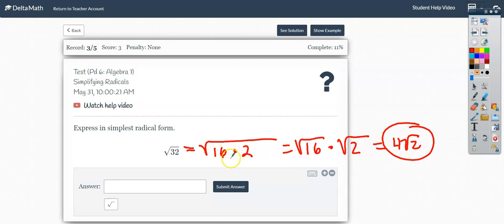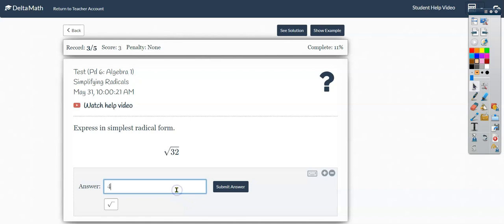So that is how you simplify a radical. You find two numbers that multiply to give you the radicand, but one of those two numbers should be a perfect square. So 4 square roots of 2.